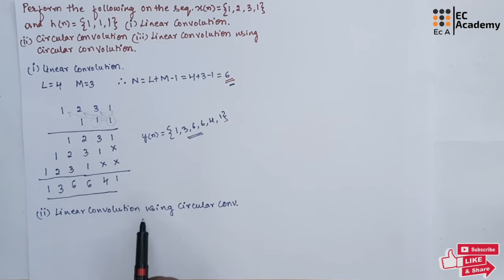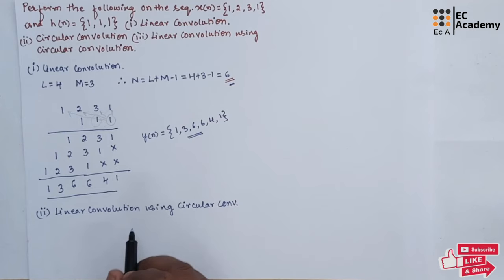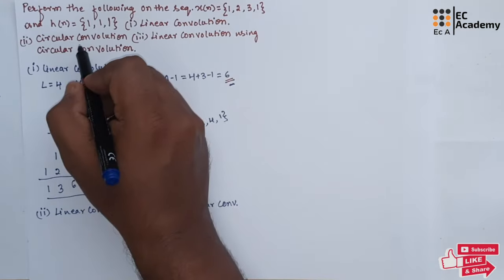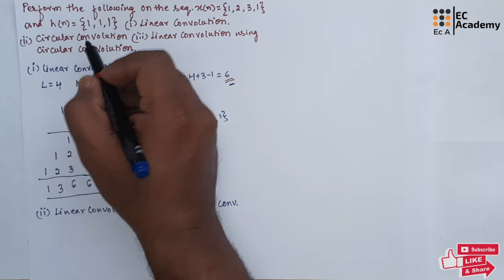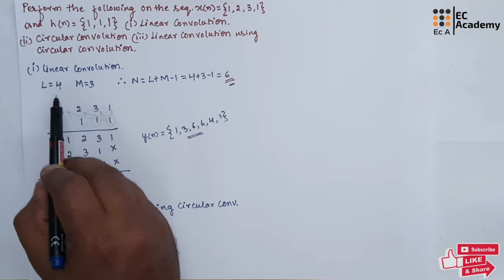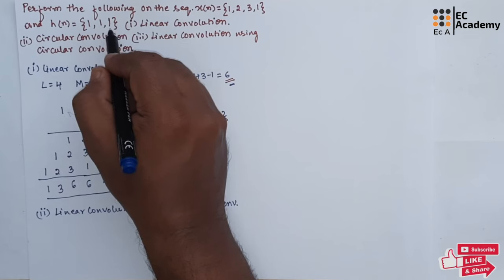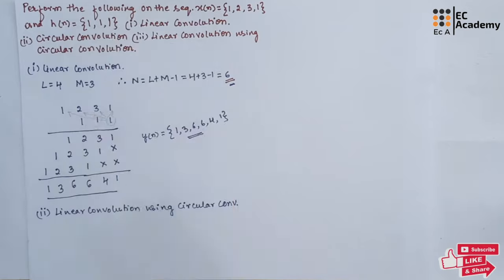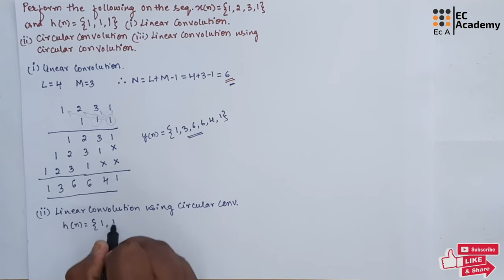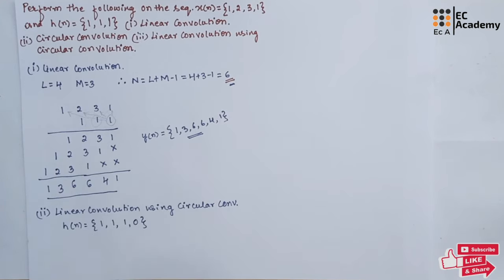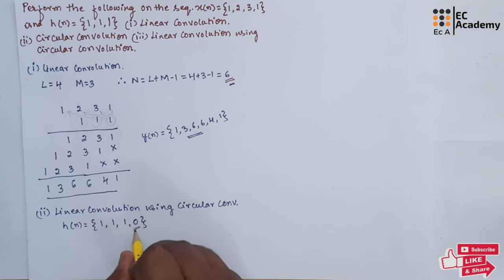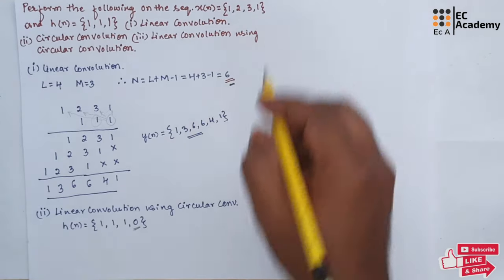Now let us perform linear convolution using circular convolution. To do this, both sequences x of n and h of n must have the same length. Here x of n has length 4 and h of n has length 3. So for h of n, we will append 1 zero to the right side. So h of n becomes 1, 1, 1, 0. This appended zero makes both sequences the same length.